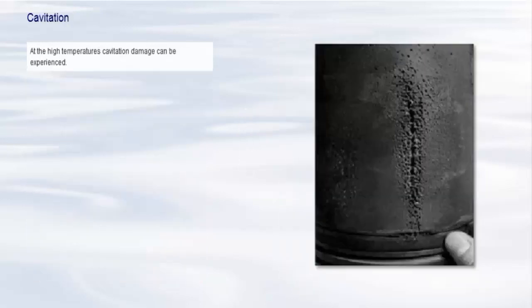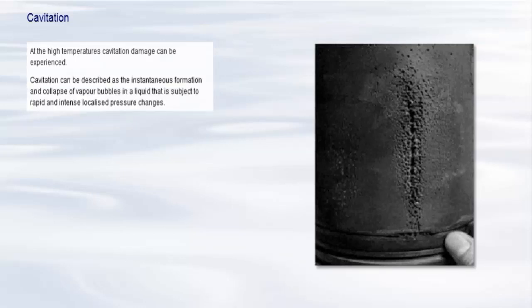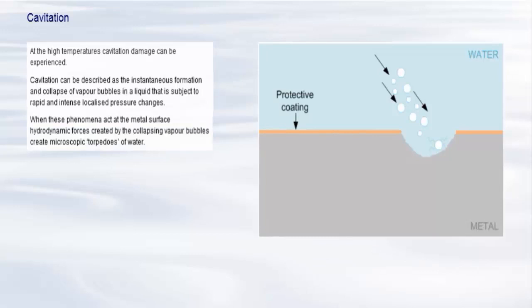At the high temperatures experienced at metal surfaces in the engine cooling system, cavitation damage can be experienced. The mechanism of cavitation can be described as the instantaneous formation and collapse of vapour bubbles in a liquid that is subject to rapid and intense localized pressure changes. When these phenomena act at the metal surface, the hydrodynamic forces created by the collapsing vapour bubbles create microscopic torpedoes of water. These torpedoes can have velocities of up to 500 metres per second and on impact with the metal surface dislodge the protective oxide coating and deform the metal itself. The damaging effect of cavitation is typically seen on engine liners and pump impellers where high temperatures and pressures cause localized boiling.